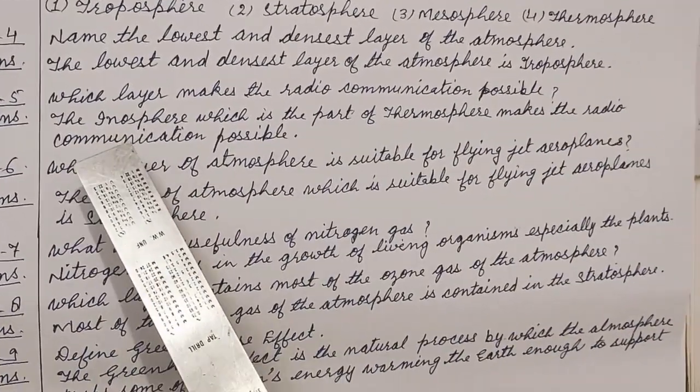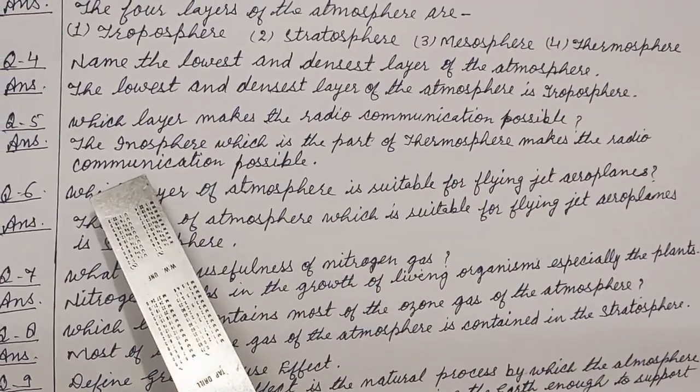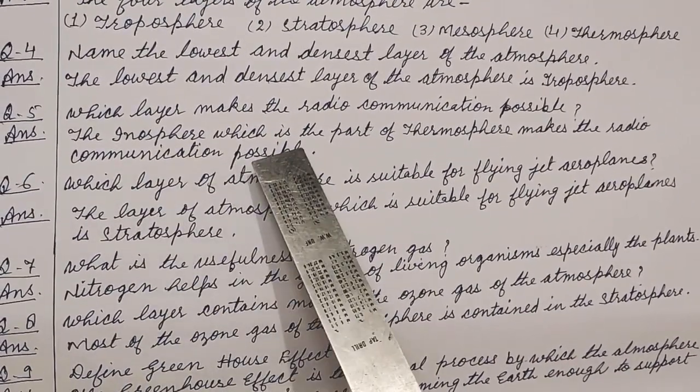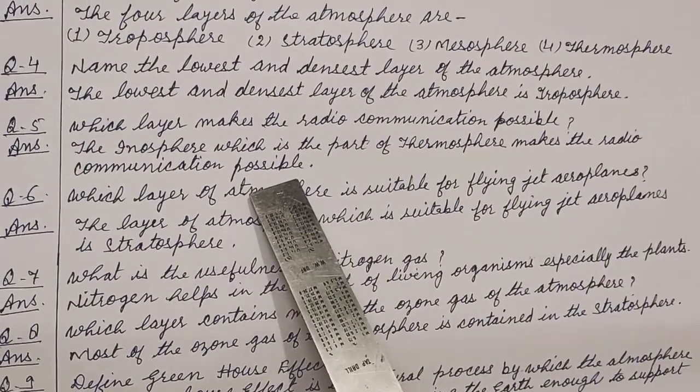Question number 5. Which layer makes the radio communication possible? Answer. The ionosphere which is the part of thermosphere makes the radio communication possible.